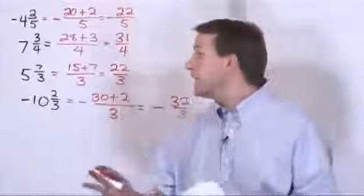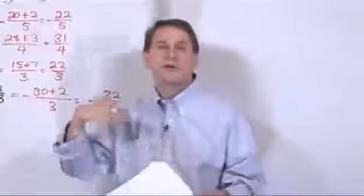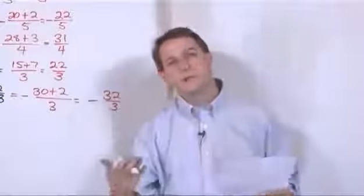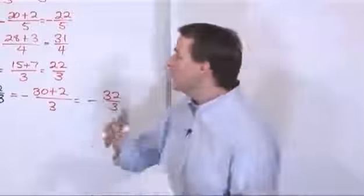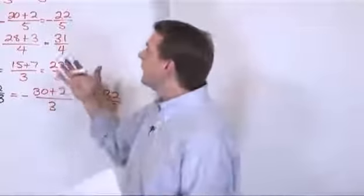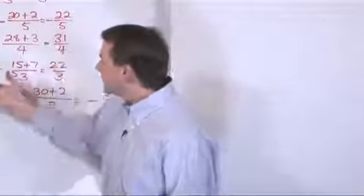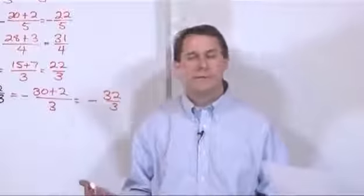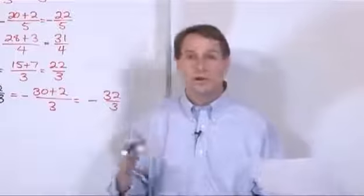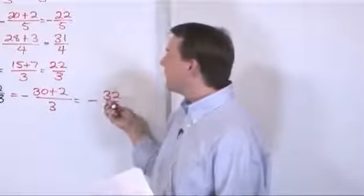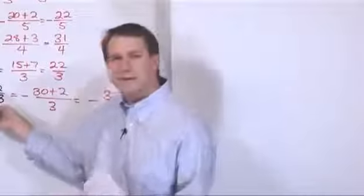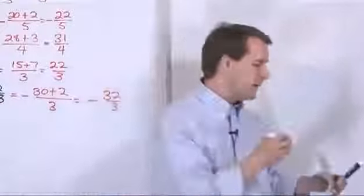So we've learned how to take a mixed fraction and convert it into an improper fraction. A lot of times you'll be asked to do that on a test. Now we need to know how to go in reverse: when you have an improper fraction, how do you go back and get a mixed fraction? Let's do it by working examples — it's easier just to show you rather than talk about it.